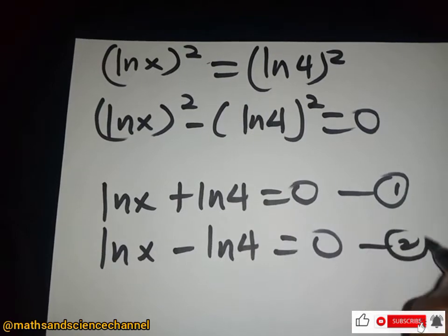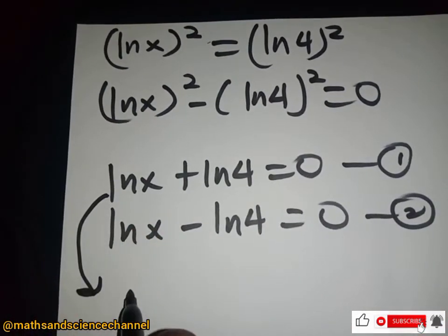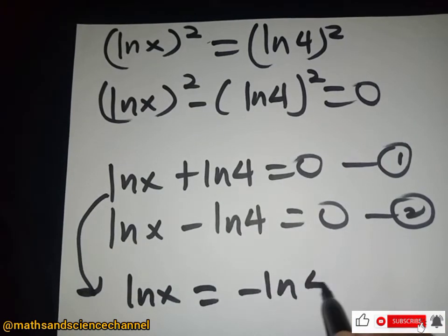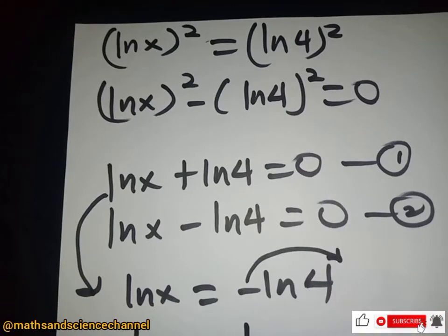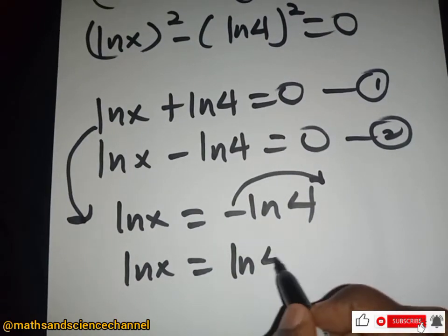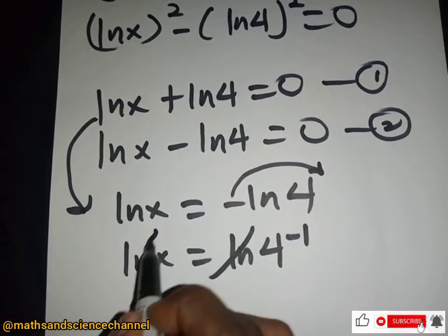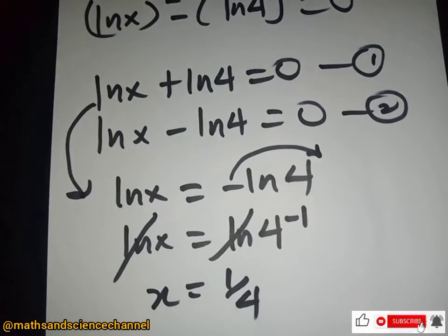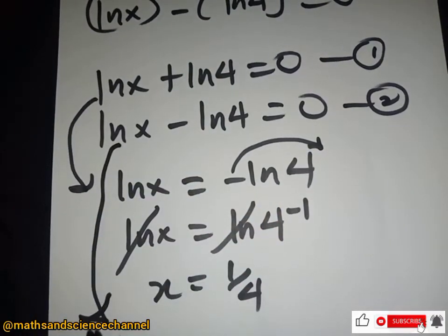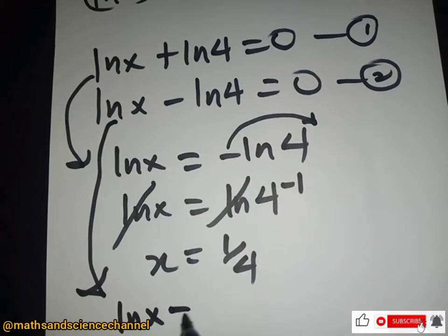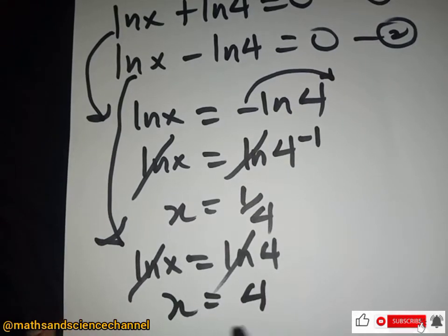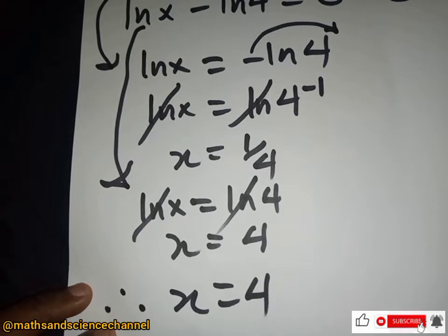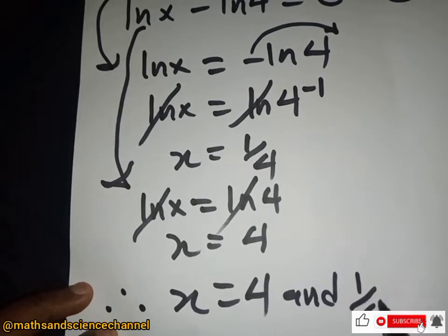For equation one: ln x equals negative ln 4, and the negative goes to the top from properties of indices, giving x equal to 1/4. For equation two: ln x equals ln 4, so x equals 4. Therefore, x equals 4 or x equals 1/4.